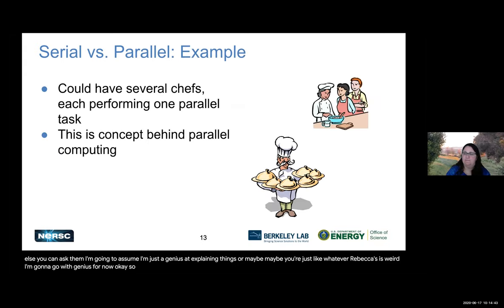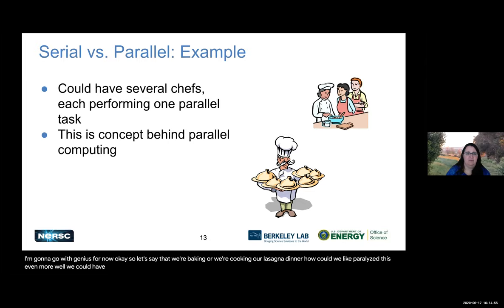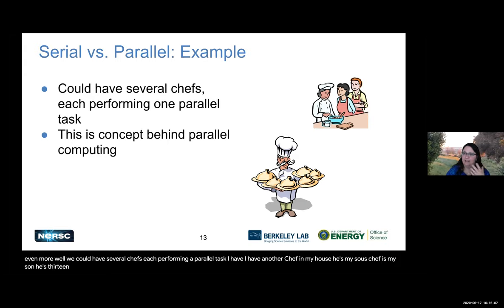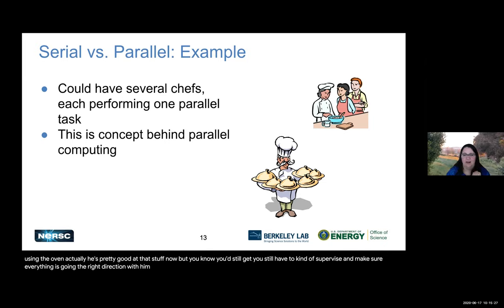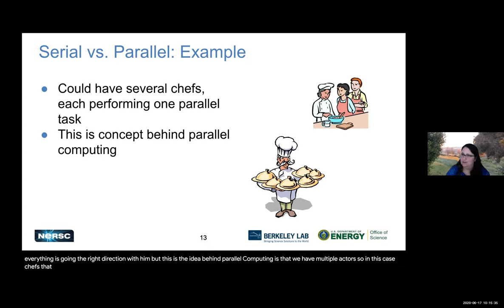Let's say we're cooking our lasagna dinner. How could we parallelize this even more? We could have several chefs, each performing a parallel task. I have another chef in my house — my sous chef, my 13-year-old son. This is the idea behind parallel computing: we have multiple actors — in this case chefs, but in computing, compute processes — doing the work so we can complete it all quickly.